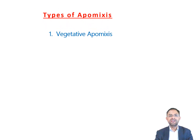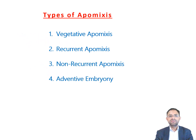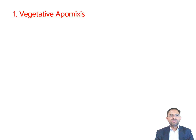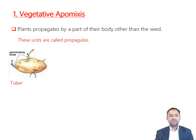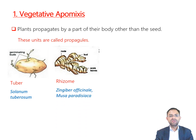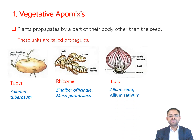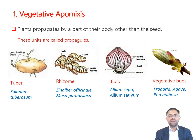Vegetative apomixis takes place through the vegetative parts of plants other than seeds. Plants propagate by a part of their body other than seeds, and these plant parts by which a plant vegetatively propagates are called propagules. Examples of propagules include tubers, found in Solanum tuberosum (potato); rhizomes, found in Zingiber officinale and Musa paradisiaca; bulbs, found in Allium cepa and Allium sativum; and vegetative buds, commonly found in Fragaria, Agave, and Poa.